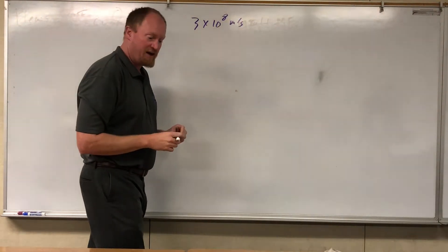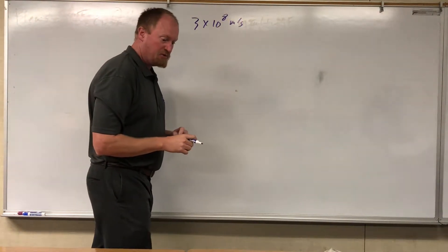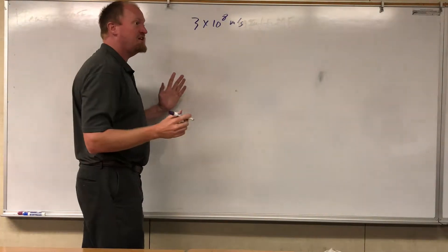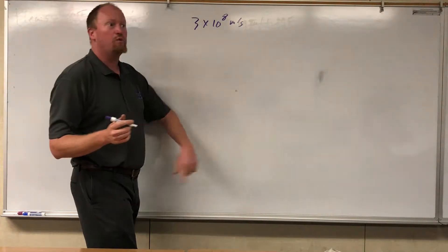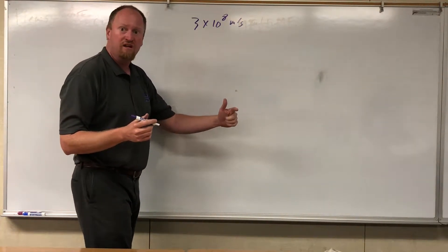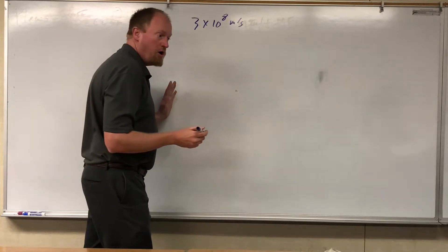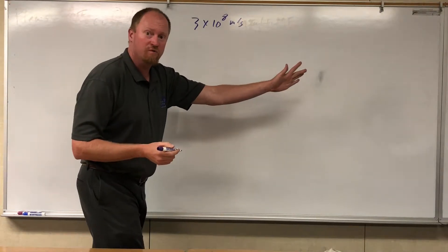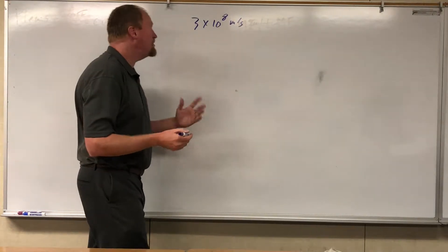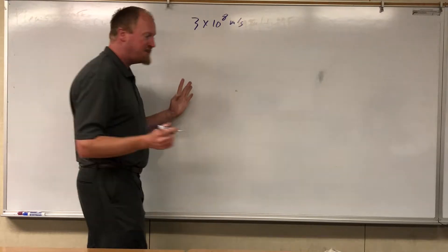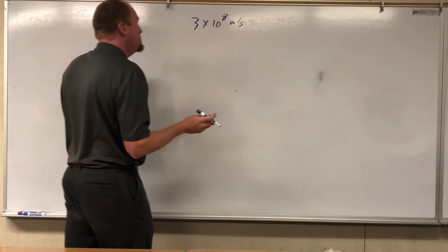Pretty darn fast. To give you an idea, in one second light can go around the earth eight times. In one second, you can go most of the way to the moon. The moon is about 1.3 light seconds away.